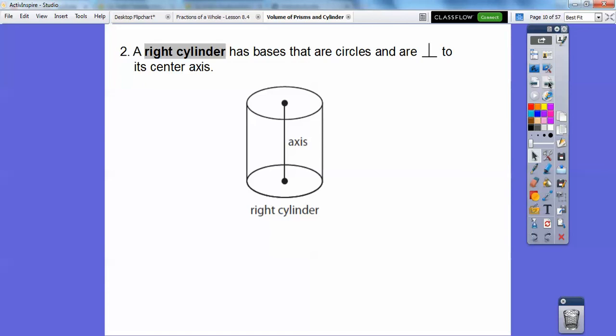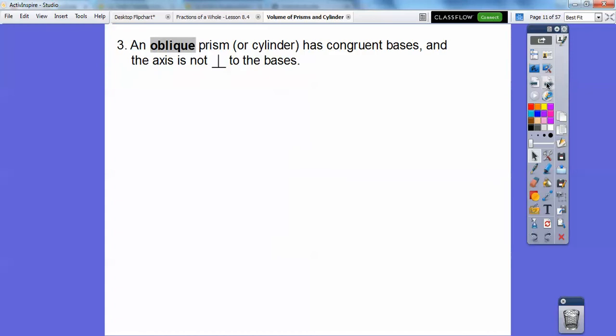So a right cylinder has bases that are circles. Notice these circles are congruent. It's just like a prism. And so it's right because this circle is perpendicular to the central axis. So there'd be like a little right angle. Cylinders have congruent circles for their bases. It's the same thing as a prism except instead of it being a polygon in prisms, there are circles.